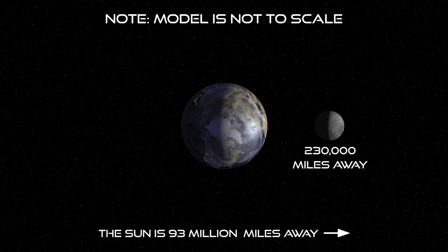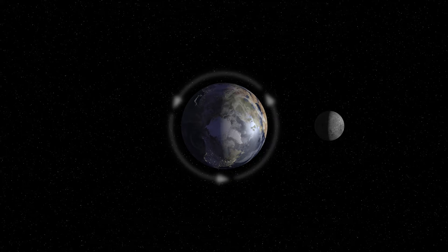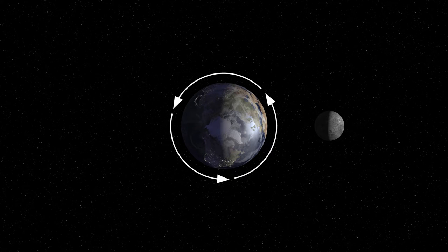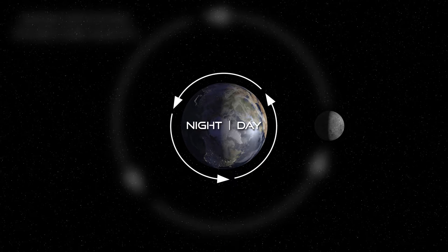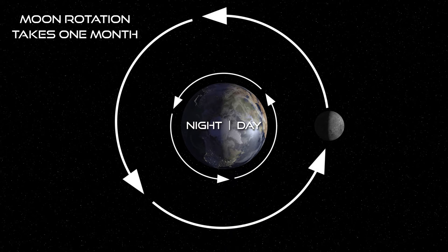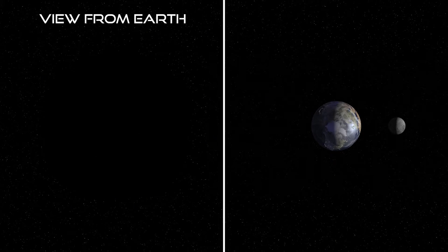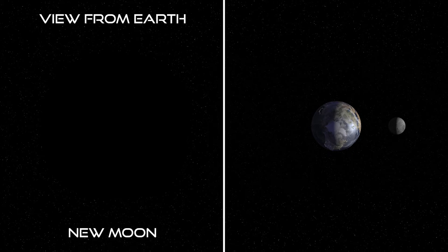In our model, Earth will rotate and show where it's day and night on both Earth and the Moon. We'll track the Moon as it orbits Earth one time, which takes about a month, and see how it looks in the sky to us here on Earth. When the Moon is between the Earth and the Sun, it's not visible, and is called a new Moon — we're looking at the night side of the Moon from our vantage point.